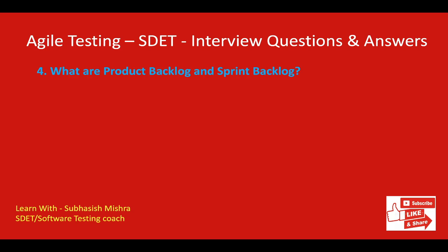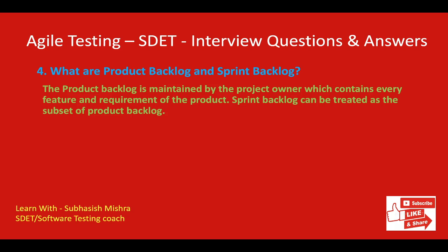What are the product backlog and sprint backlog? Product backlog is maintained by the product owner and contains every feature and requirement of the product. The list of product backlog items are prioritized by the product owner as high and low, and can also be de-prioritized constantly. Sprint backlog is a subset of the product backlog which contains features and requirements related to a particular sprint only.